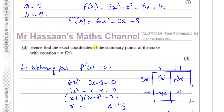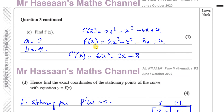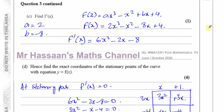So there we have the answer to question number 3 from this paper, all to do with the factor and remainder theorems, and also a bit of differentiation finding the stationary points. On the playlist there should be a link to the other questions on this June/October 2020 paper, and a card for questions on the factor and remainder theorem. You can subscribe to my channel and see another P2 paper on the end screen. Thank you for watching and see you soon.